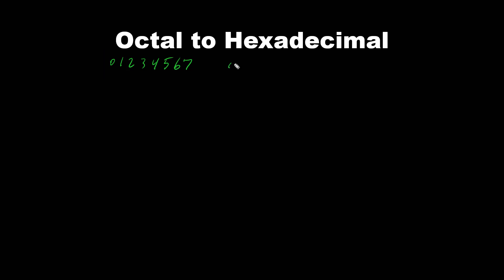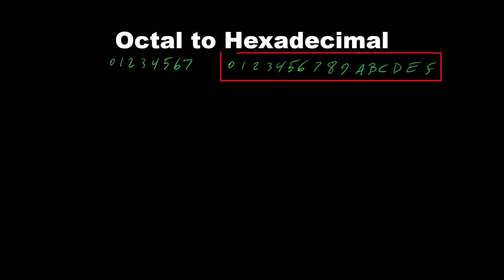In hexadecimal we have 0, 1, 2, 3, 4, 5, 6, 7, 8, 9, A, B, C, D, E, and F — a total of 16 different digits including 0.